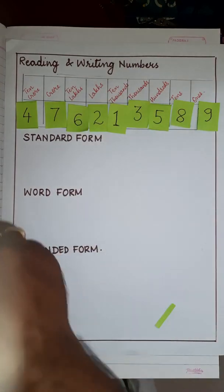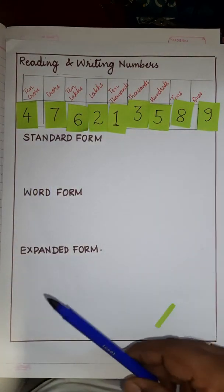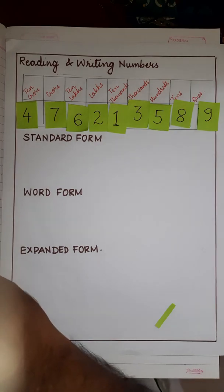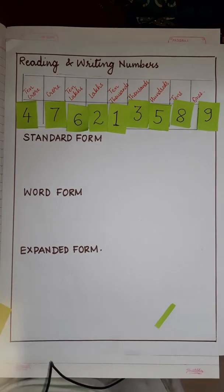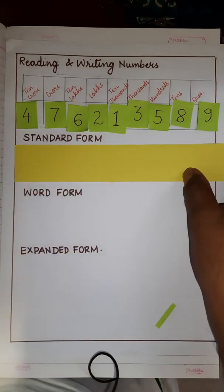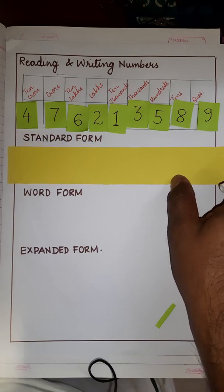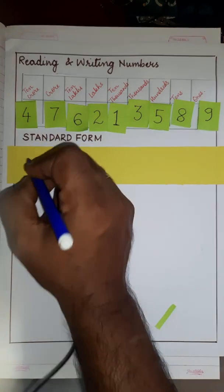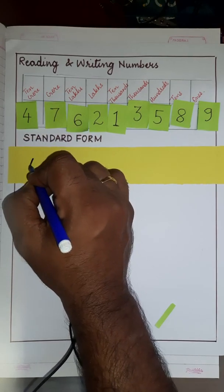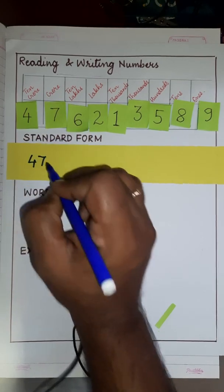Suppose I keep the numbers like this. Now, we shall learn how do we write the standard form of this number. Standard form means writing the number, so it is 47 crores.